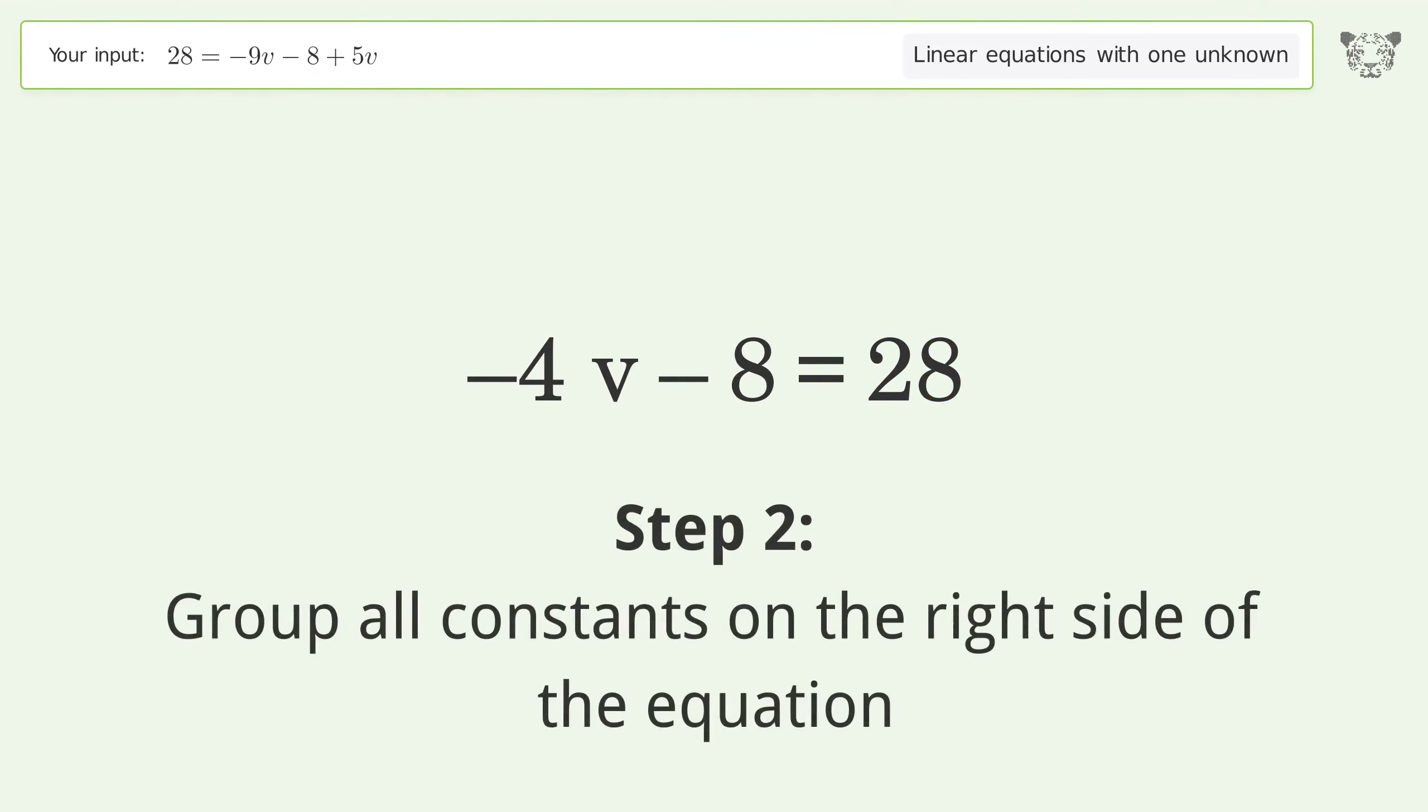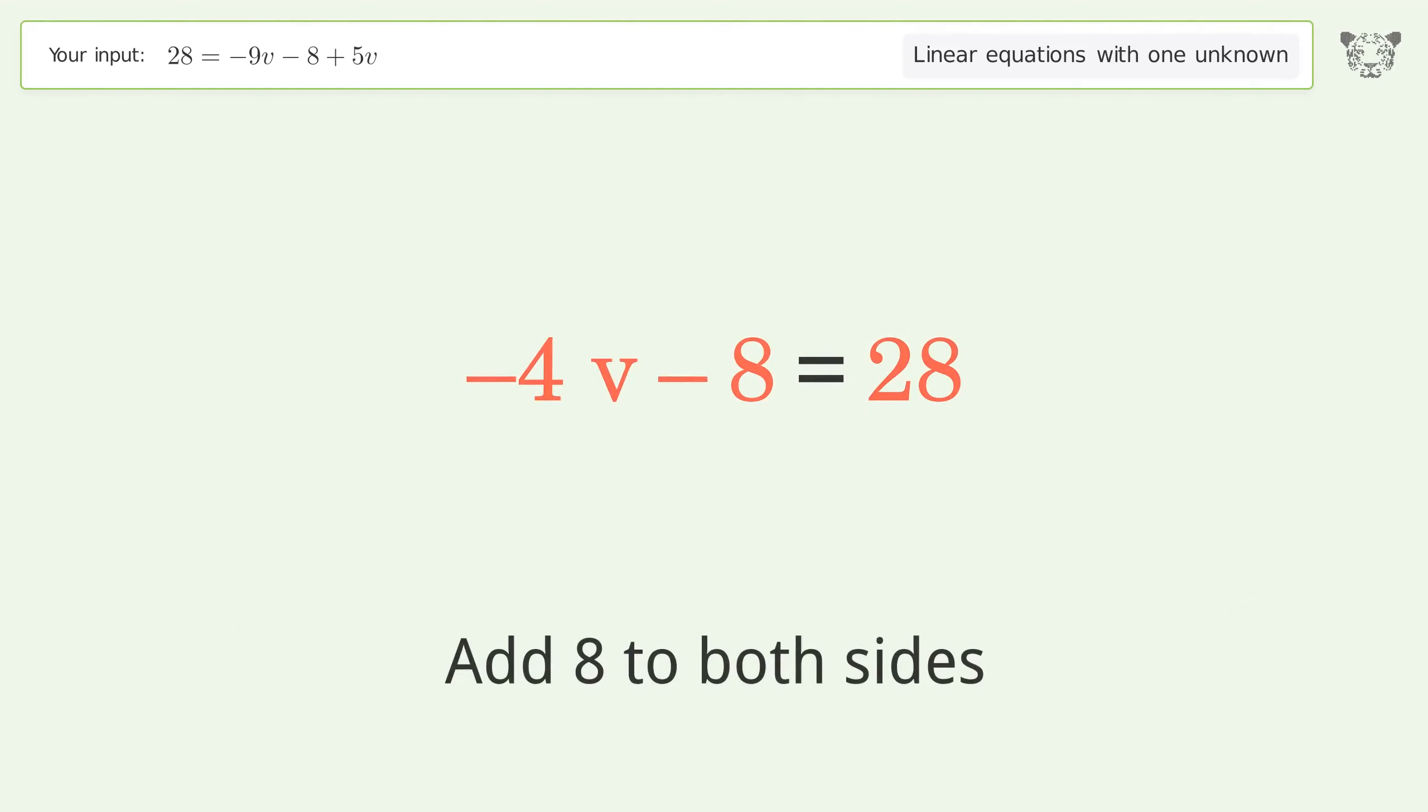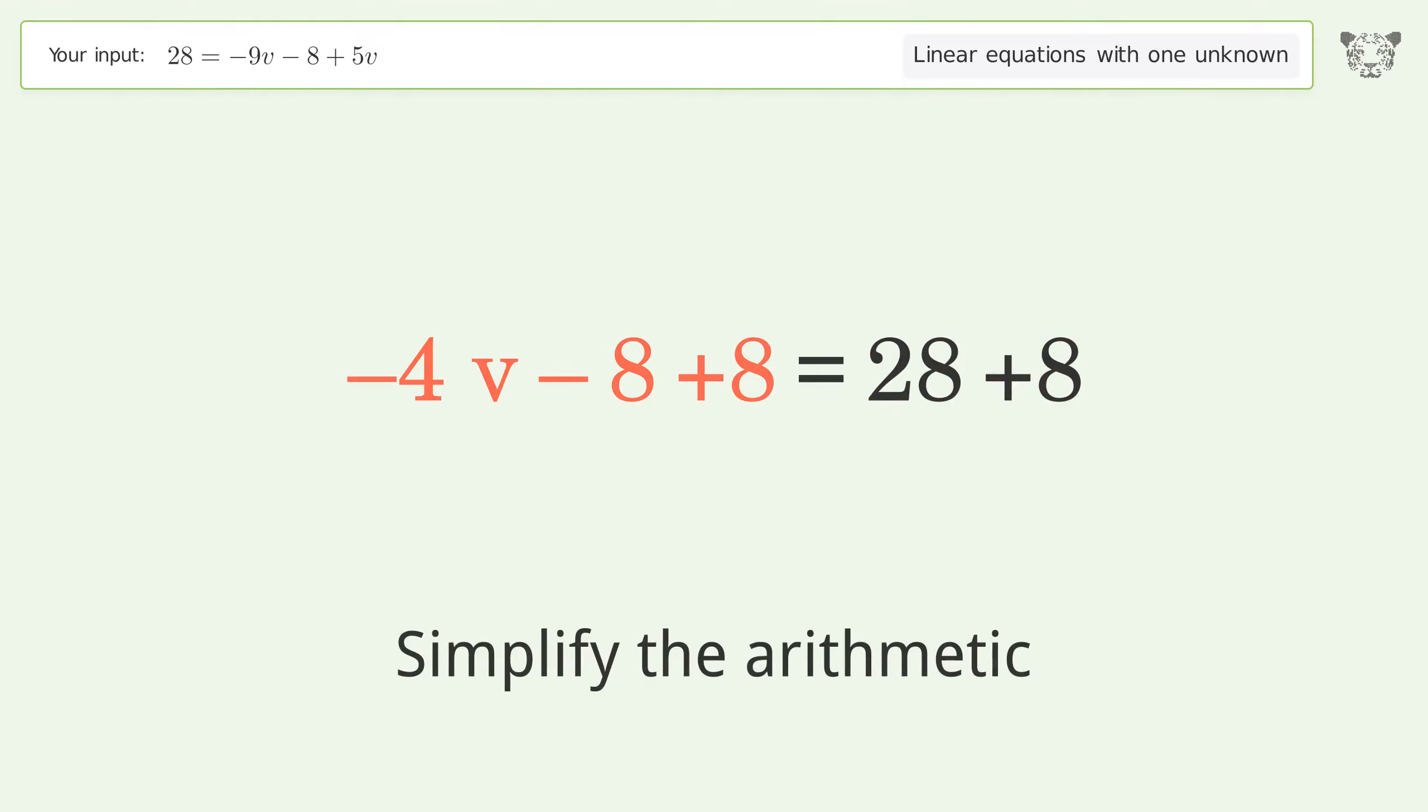Group all constants on the right side of the equation. Add 8 to both sides. Simplify the arithmetic.